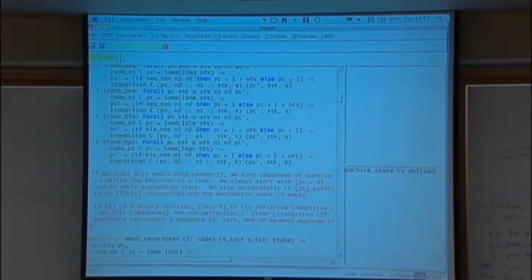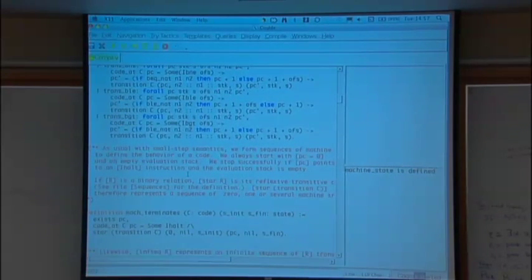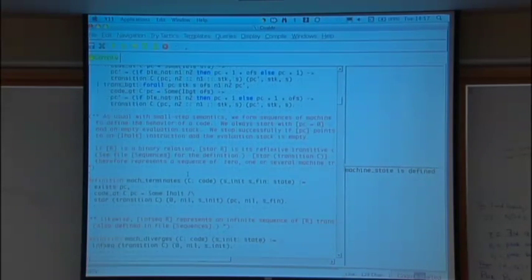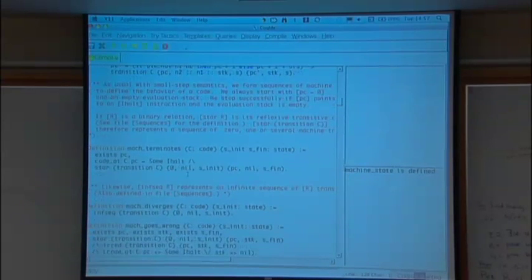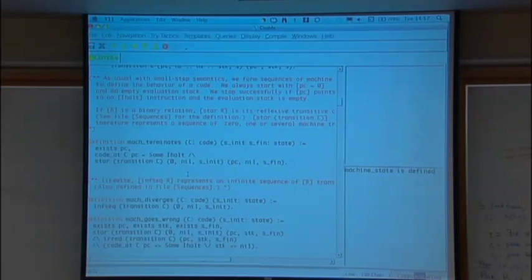But what is more interesting is now how do we define the behavior of the program. So let's say we start the machine in an initial state. And what do we do? Well, we chain transitions as much as we can. And then three possible behaviors arise.